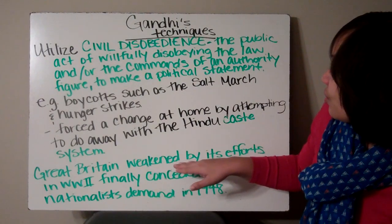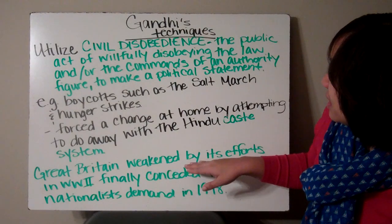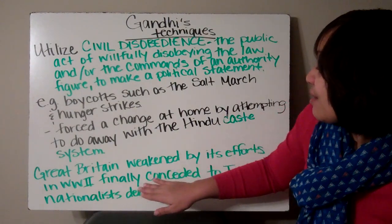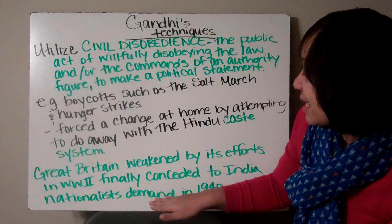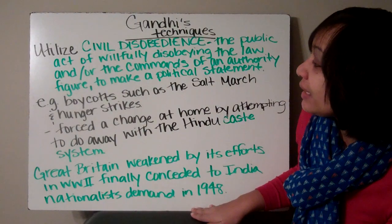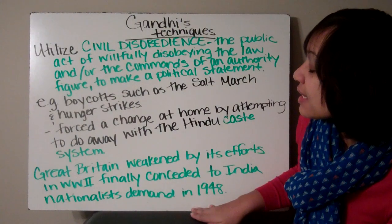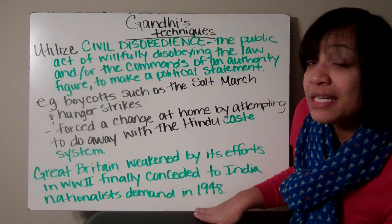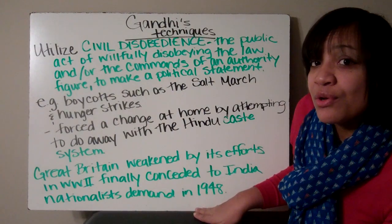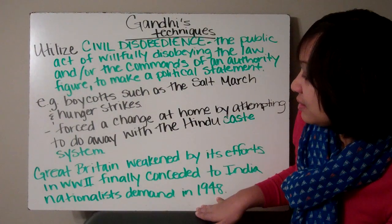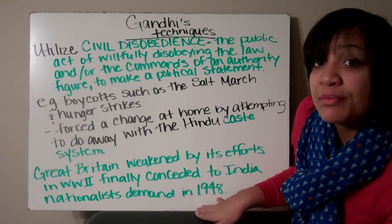Great Britain was weakened by its efforts in World War II and finally conceded to India's nationalist demands in 1948, so India gained their independence in 1948. Sadly, Gandhi was assassinated and was not going to be allowed to see India's independence.